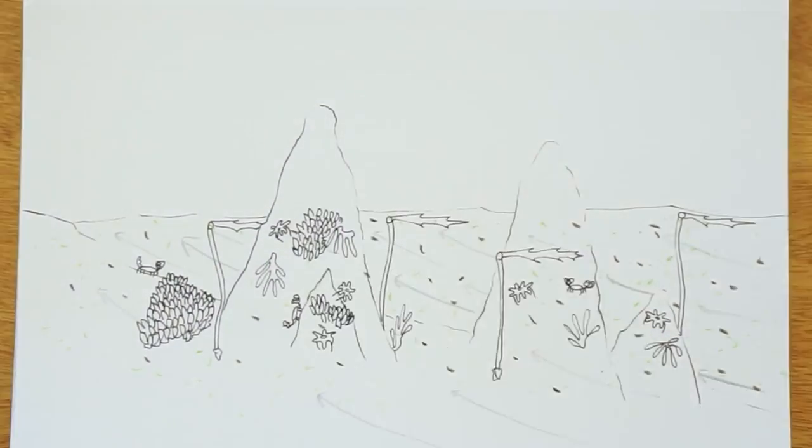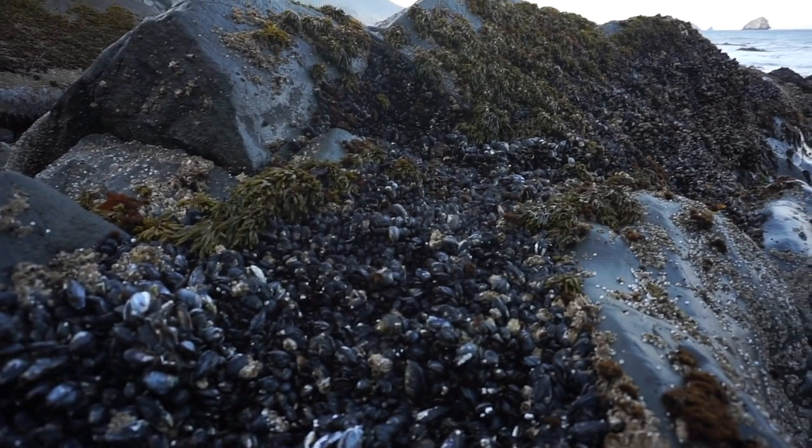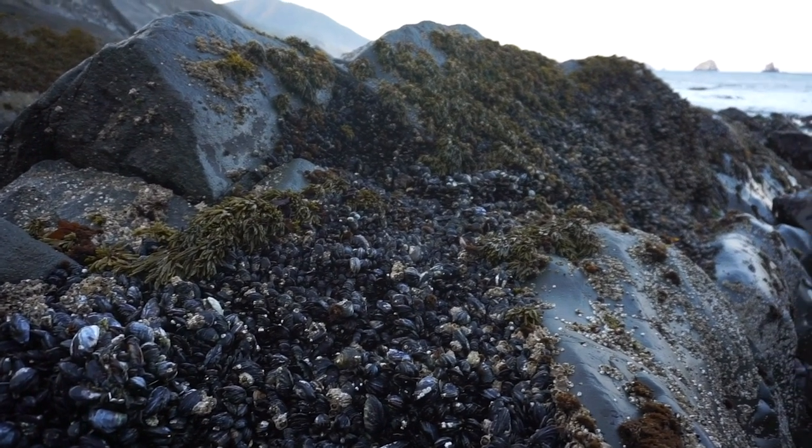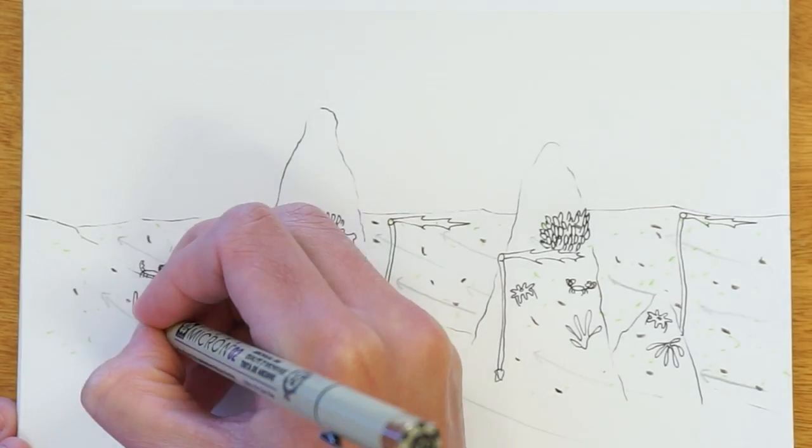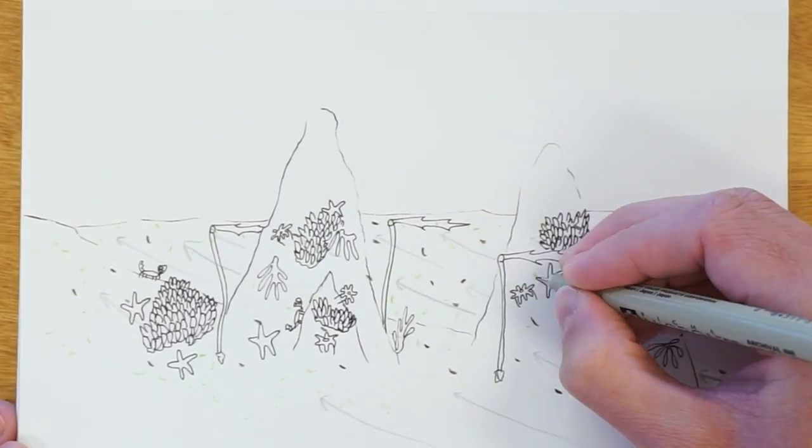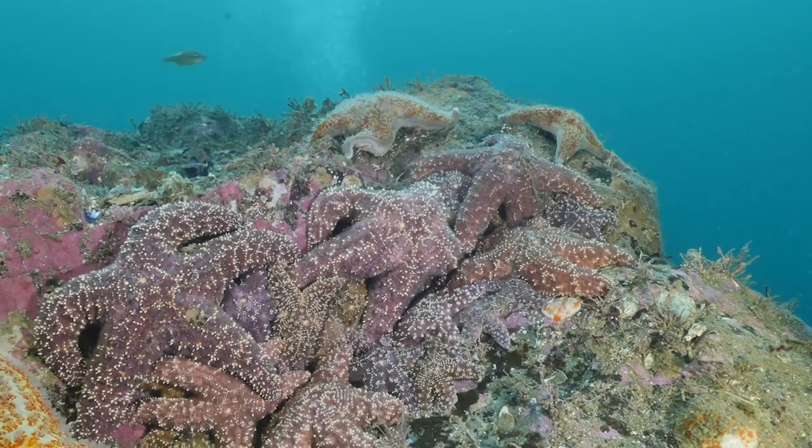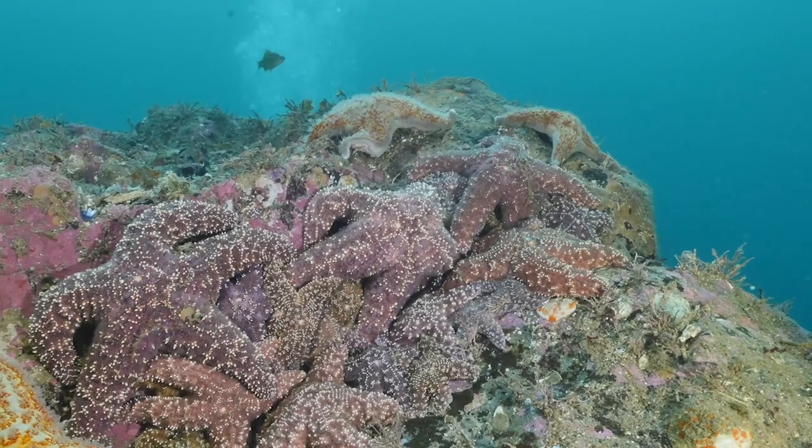Large colonies of mussels also attach to the rocks and filter out algae from the seawater. Colorful sea stars can be found moving slowly along the rocks using their tube feet and eating the mussels and other attached creatures.